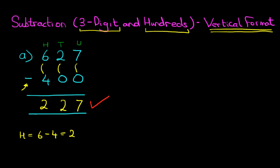I told you it was easy — it's very easy. Okay, let's have a look at one more example. This time we have 941 minus 700.